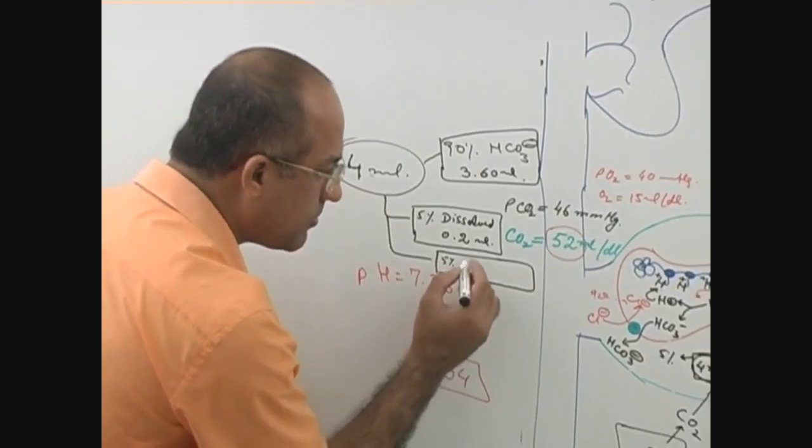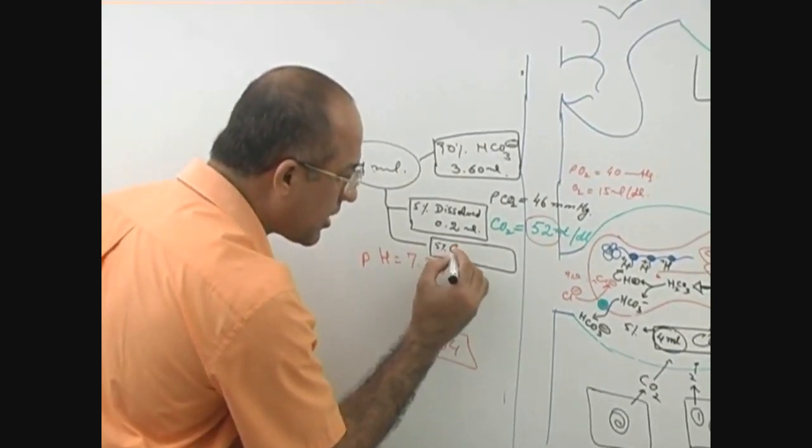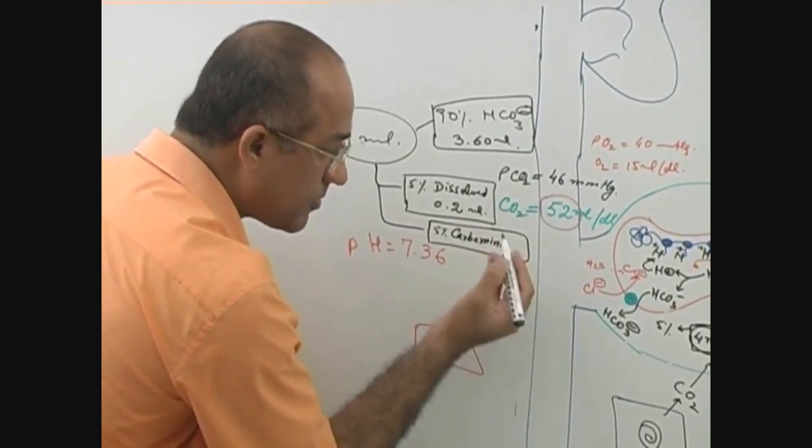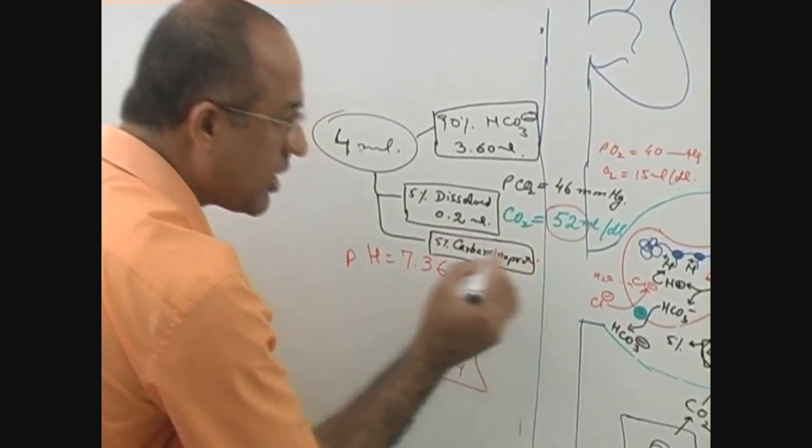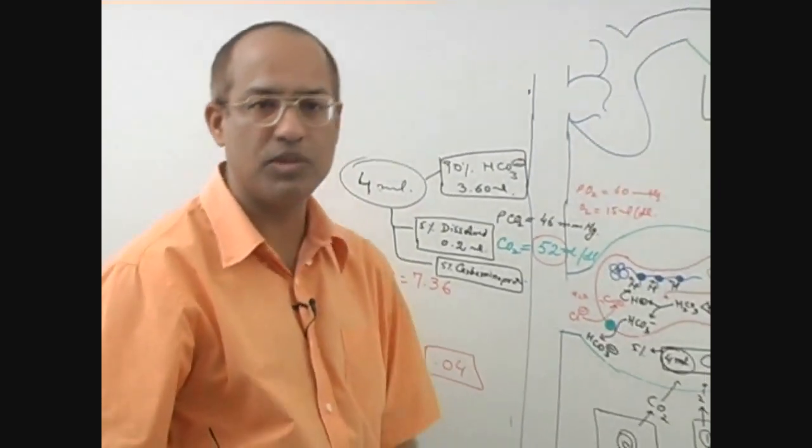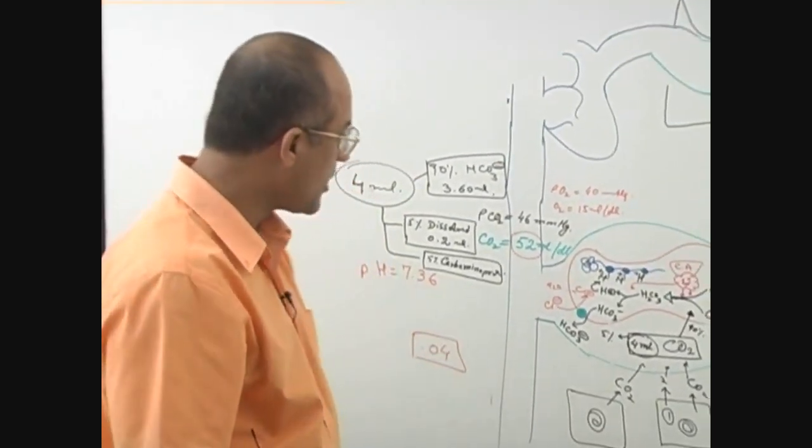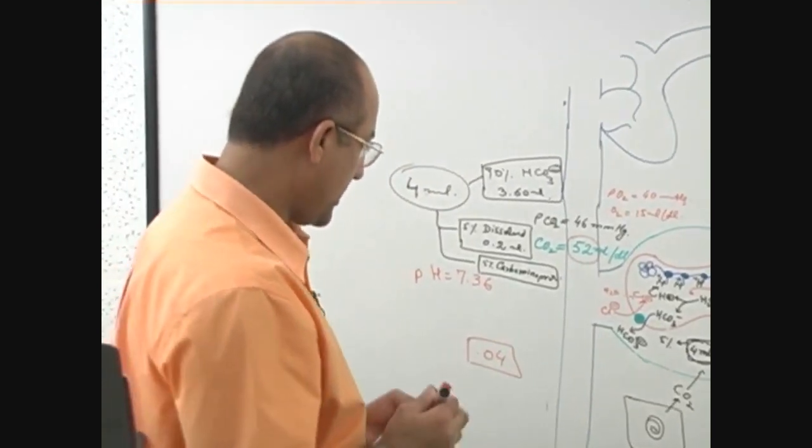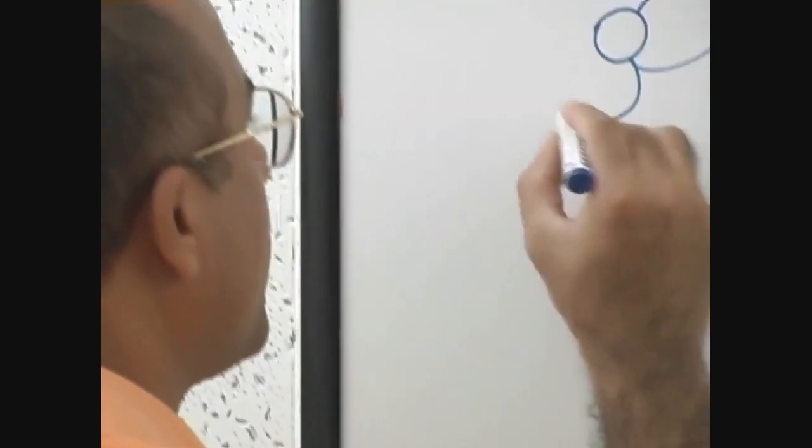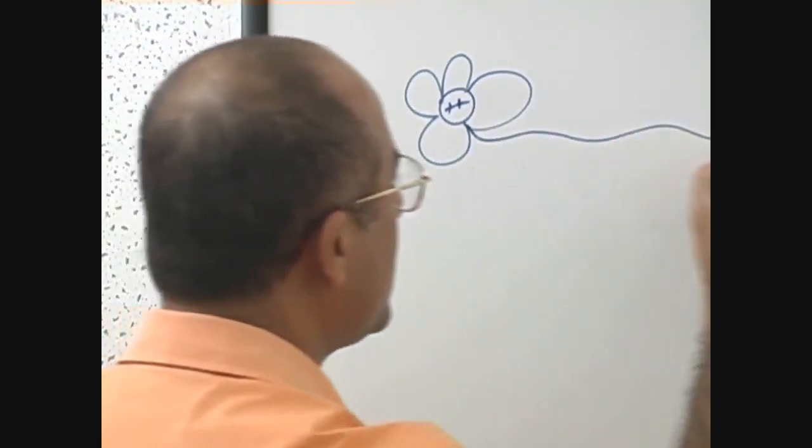And remaining 5%—even though books differ a little bit—but anyway, remaining 5% is present in special form that is called carbamino proteins, especially carbaminohemoglobin. Now let me tell you what is meant by carbaminohemoglobin. Let me make a hemoglobin monomer.